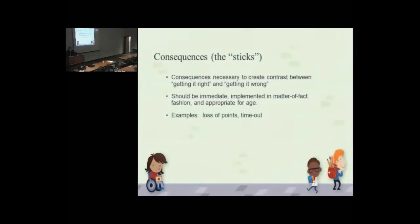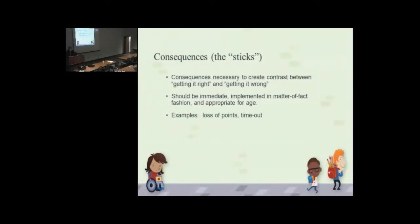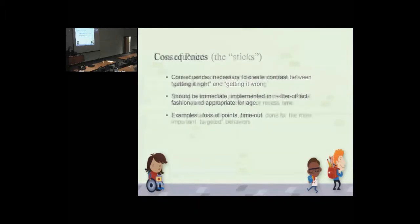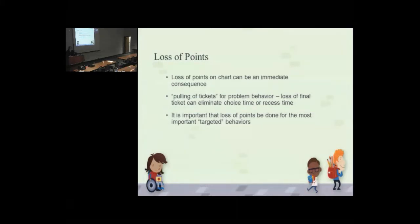Loss of points. If you're doing a token system, a timeout if you're dealing with younger kids. Loss of points on a chart can be an immediate consequence. Some classrooms do pulling of tickets for problem behavior. Loss of the final ticket can eliminate choice time or recess time. And it's important that the loss of points be reserved for the most important targeted behaviors so that kids aren't losing points all day long. Those are just for the big deal behaviors.